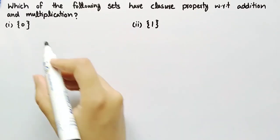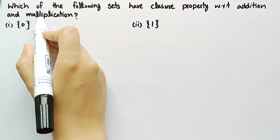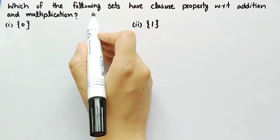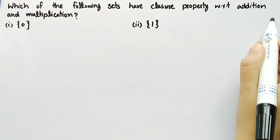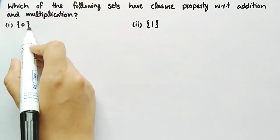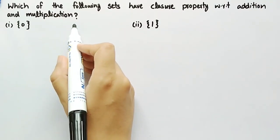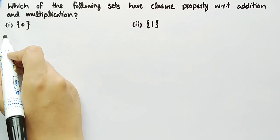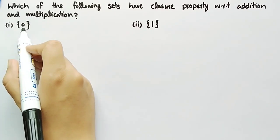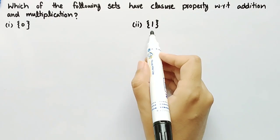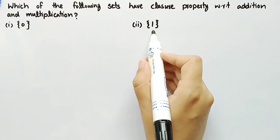In this video we will find which of the following sets have closure property with respect to addition and multiplication. In the first one, the set contains just one element, that is zero. In the second question, the set contains an element which is one.